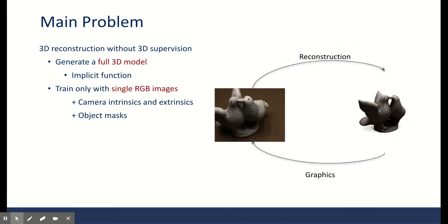My presentation today is about differential volumetric rendering by Michael Neymar and colleagues. In this work, we target generating a full 3D model without any 3D supervision. This means that during training, they only require 2D images plus camera intrinsics and object masks—no 3D supervision. They're able to learn implicit functions to model the 3D surface and 3D texture of the object, so you can render it from any viewpoint.